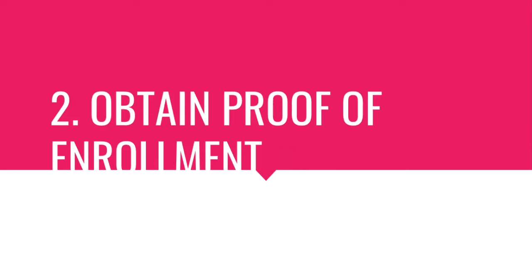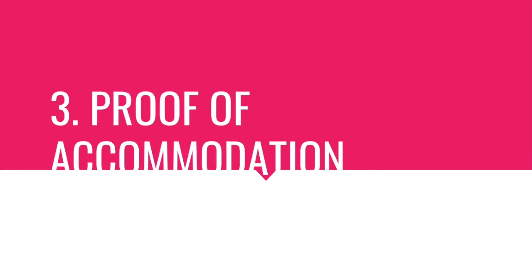The second thing you need is proof of enrollment. Get an official document from your university confirming your enrollment as a student — this can be a letter from the university or a current student ID. You also need proof of accommodation: provide evidence of where your family members will be staying, which can include rental agreements, a letter from your landlord, or confirmation of hotel bookings.